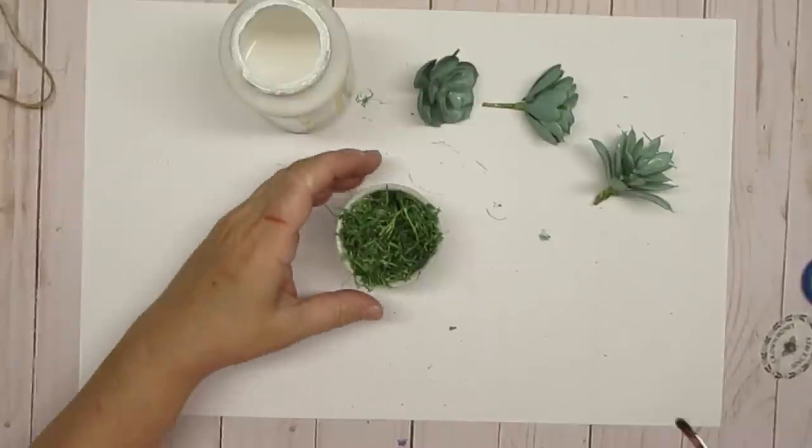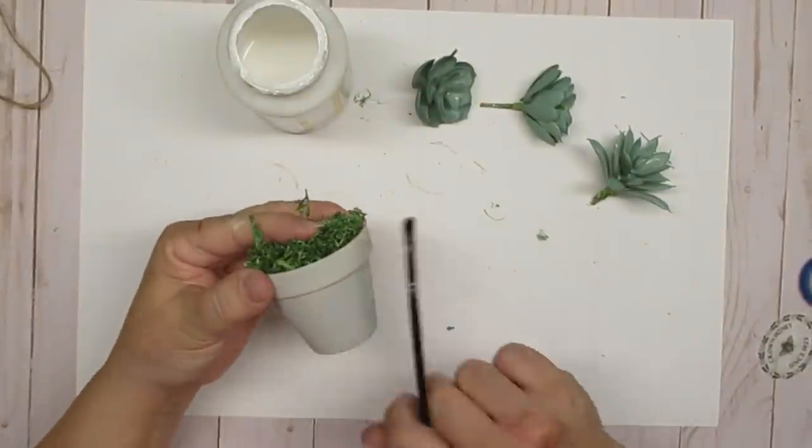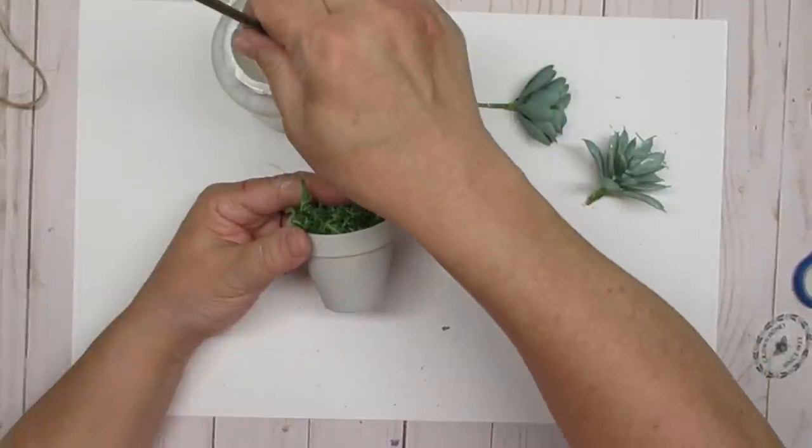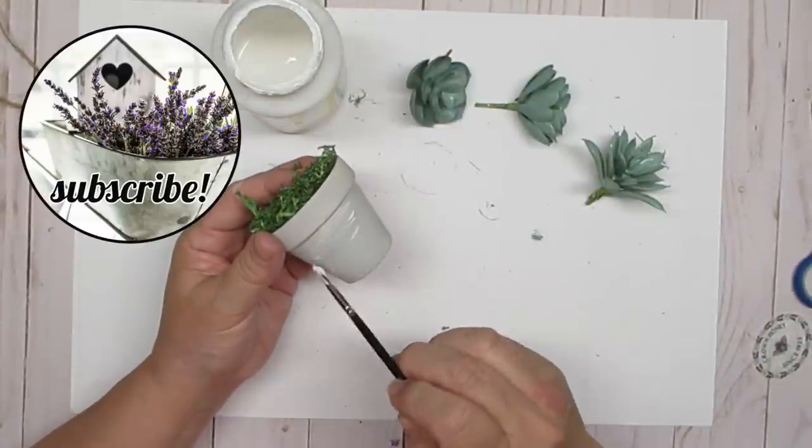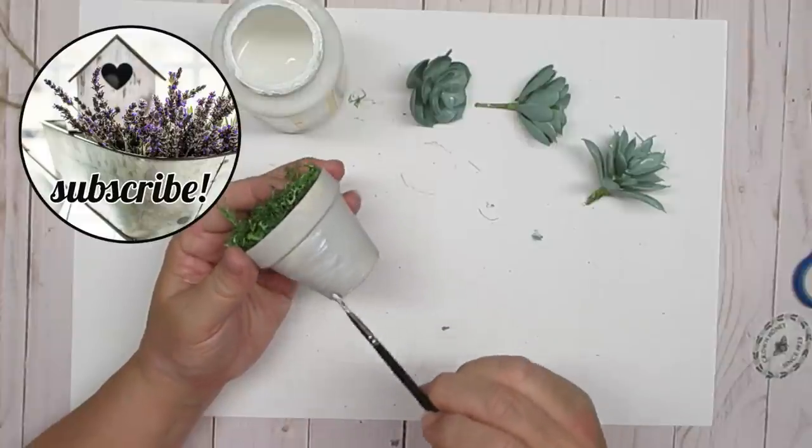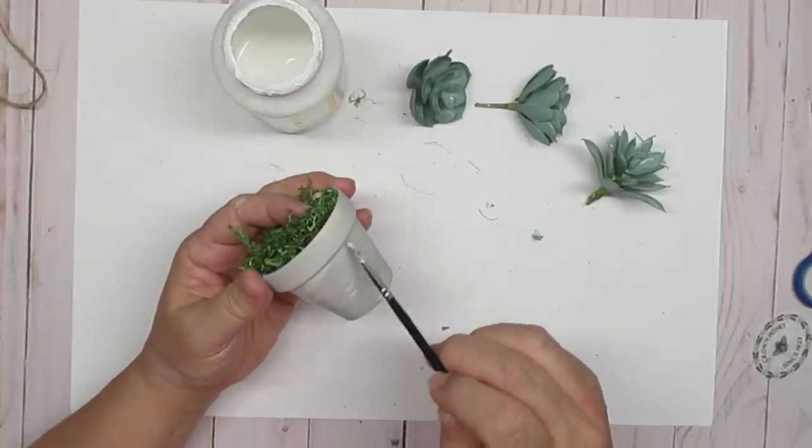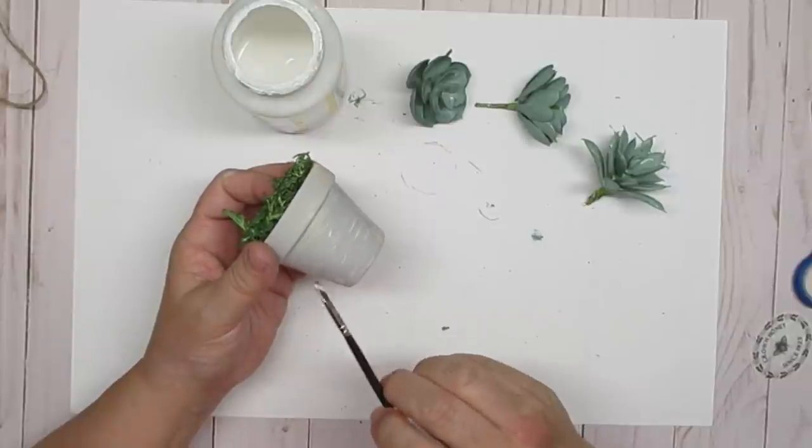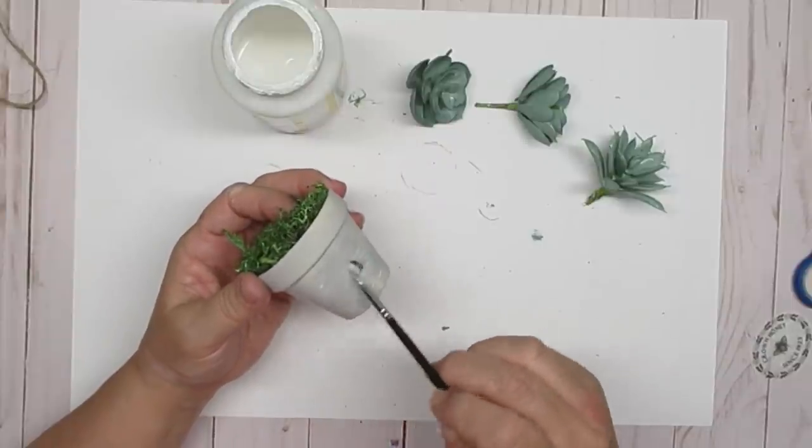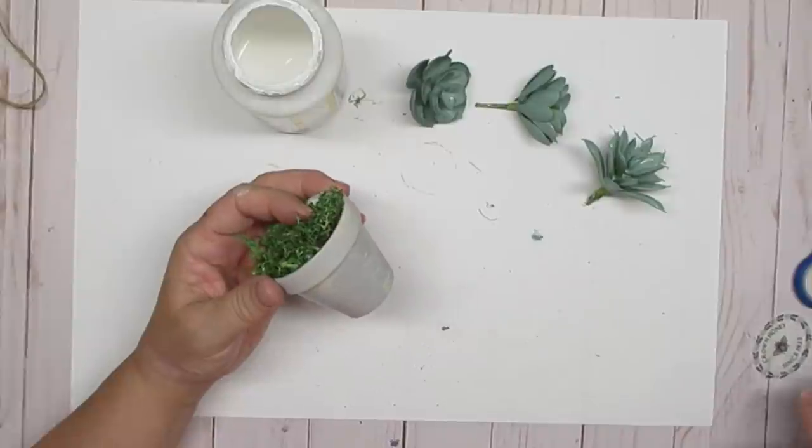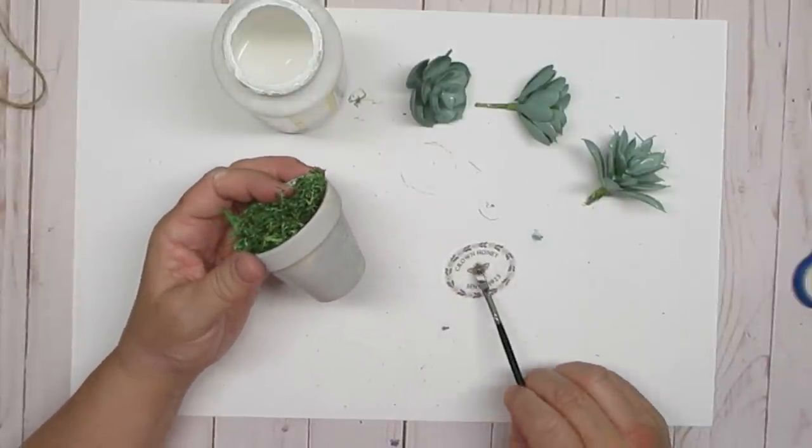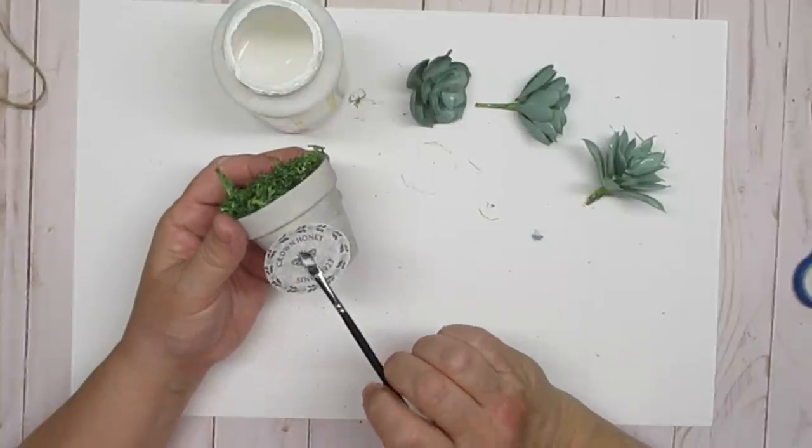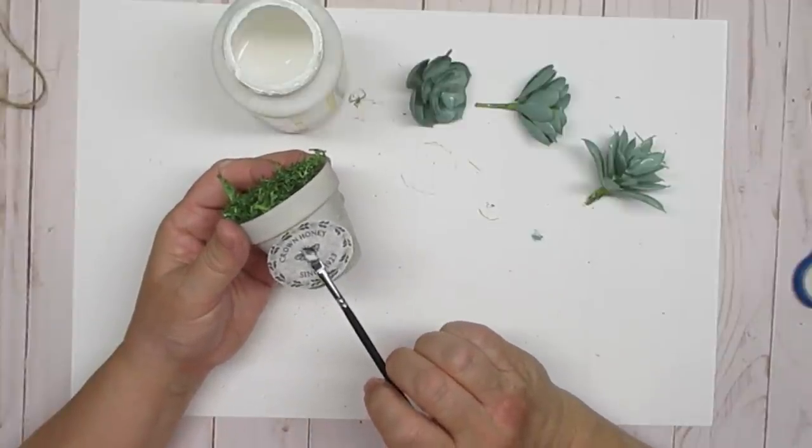While I wait for the succulents to dry I'm going to doctor up this little pot with a tissue paper print. I'm using some Mod Podge and I'm going to just put a nice thin layer of Mod Podge all over where I know the label is going to go. Then I'm going to grab it using my paintbrush. I love this trick because then I don't have to use two hands.